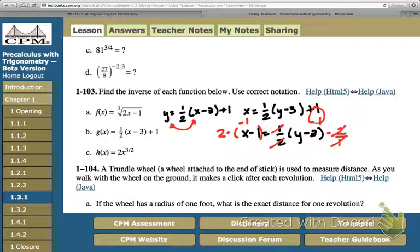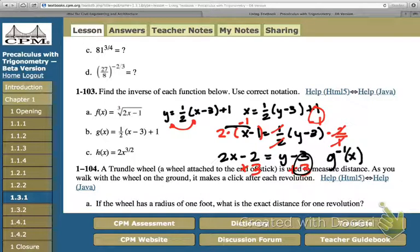Now, we have 2x minus 2 we distribute equals y minus 3. And now the last move, this is simplifying it, is to add 3. Add 3 each side. This will cancel. The final answer here is g inverse of x is equal to 2x plus 1. That's the simplified form.